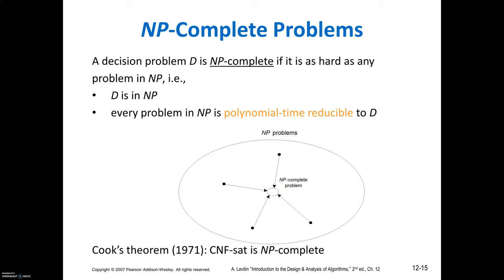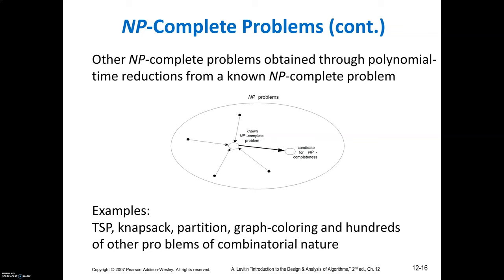Next, NP-complete problems: a decision problem D is NP-complete if it is as hard as any problem in NP — that is, D is in NP, and every problem in NP is polynomial-time reducible to D. Examples of NP-complete problems include the Traveling Salesman Problem, knapsack, partition, and graph coloring.